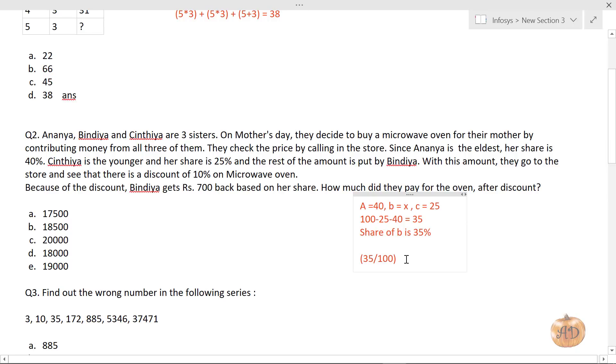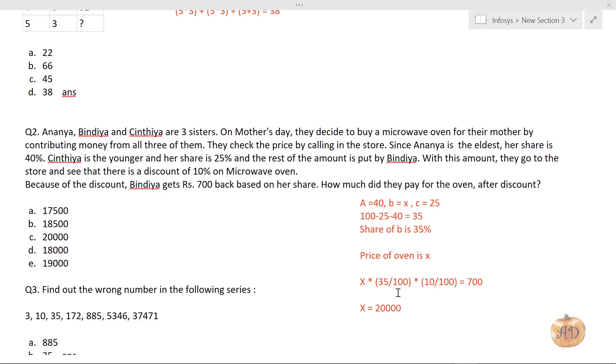We know Bindya gets Rs. 700 back based on her share. So 35% of X × 10% discount = 700. That is (35/100) × X × (10/100) = 700. Since this is her share and we're using the discount formula 10/100, this is the discount amount she gets. Solving for X, you get X = 20,000. This is the actual MRP of the microwave oven.